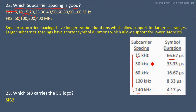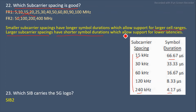Both are important — we cannot say low or high subcarrier spacing is better; it depends on the requirement. Smaller subcarrier spacing like 15 kHz has a longer symbol duration, which allows support for a larger cell range. Larger subcarrier spacing like 240 kHz, 120 kHz, or 60 kHz has shorter symbol duration, which supports lower latency. For higher throughput or larger cell range, use lower subcarrier spacing.